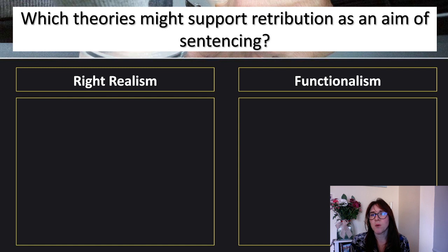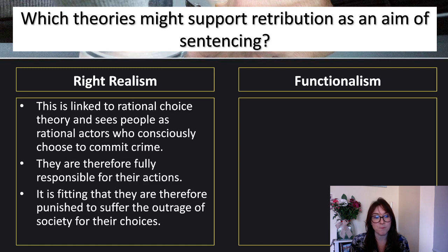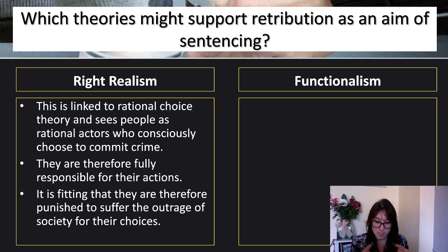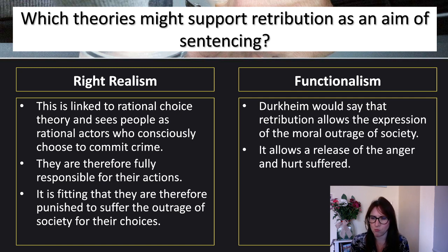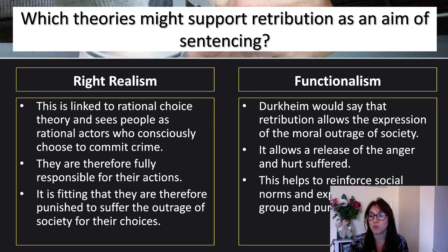Which theories might support retribution as an aim of sentencing? Right realism is linked to rational choice theory and sees people as rational actors who consciously choose to commit crime. If you are consciously, deliberately, with free will, doing an action, then you need to be consciously, deliberately and with free will punished for it. They are therefore fully responsible and it's fitting that they suffer the moral outrage of society for their choices. Functionalism: Durkheim would say that retribution allows the expression of moral outrage, providing a function — it allows a release of the anger and hurt suffered, helping to reinforce social norms and punish deviants.